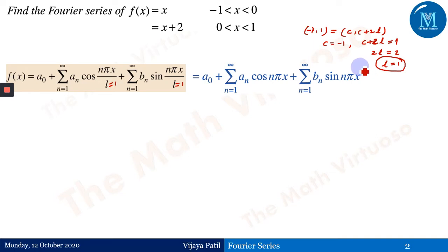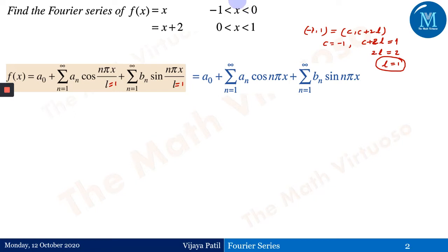Almost all types of examples — algebraic, exponential, trigonometric — we have already discussed for intervals 0 to 2π, minus π to π, and 0 to 2l. That is why I have taken only one question here with l equals 1, that is the interval from minus 1 to 1.